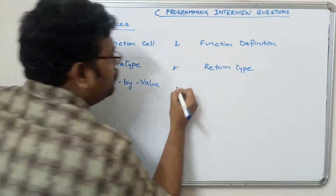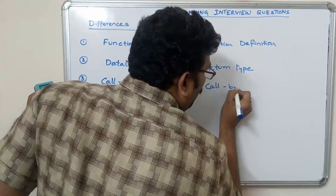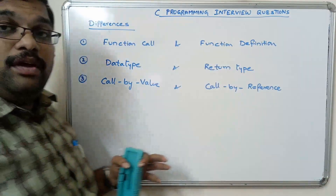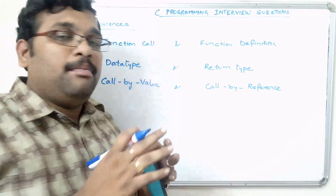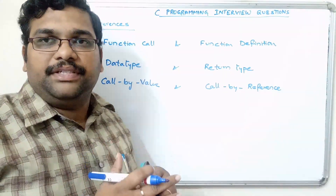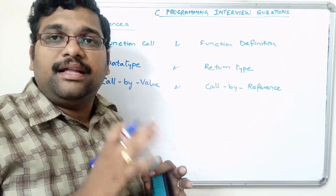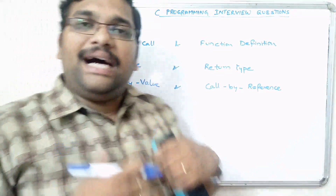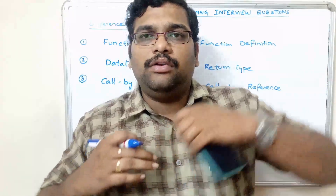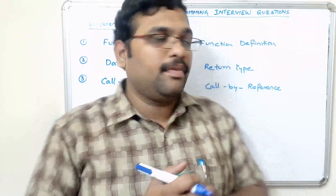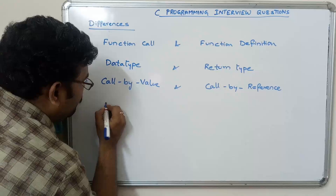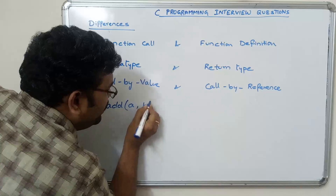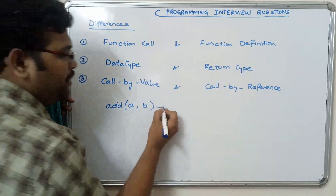The third difference is call by value and call by reference. Here we are discussing the function call and function definition: function call is the reference and function definition is the actual logic. We can pass some inputs from the function call to the function definition — for example, for addition, we write add(a, b) as a function call.